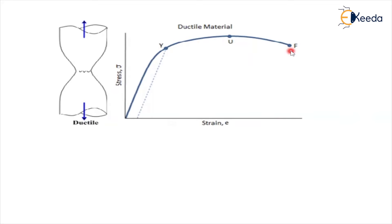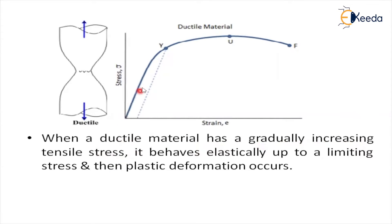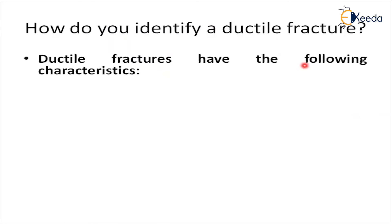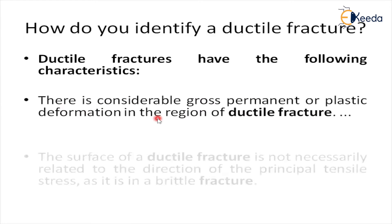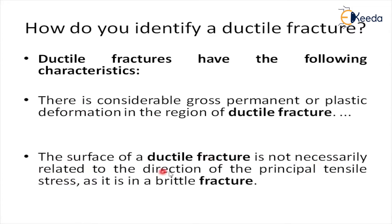When a ductile material has gradually increasing tensile stress, it behaves elastically up to a limiting stress, and then plastic deformation occurs. We can identify ductile fracture by two characteristics: first, there is considerable gross permanent or plastic deformation in the region of ductile fracture. Second, the surface of the ductile fracture is not necessarily related to the direction — unlike in brittle fracture, direction is not important in ductile fracture.